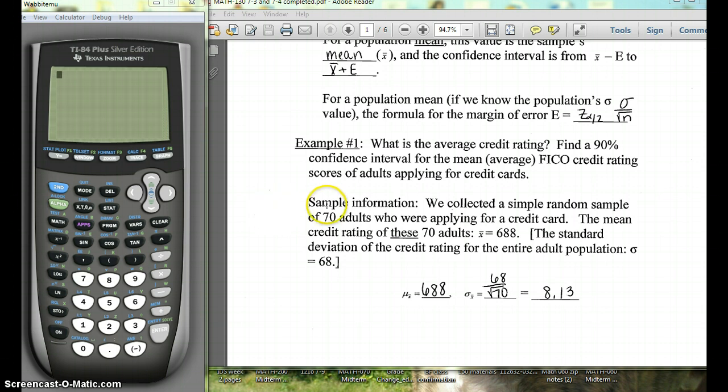Okay, so here's the information we're given. We've collected a simple random sample of 70 adults who are applying for a credit card. The mean credit rating of these 70 adults, the mean rating is 688 and we happen to know that the standard deviation for the entire population is 68.